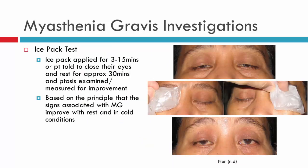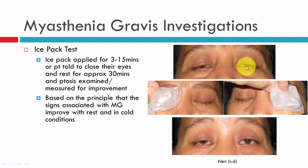Next, we have the ice pack test, which is far less invasive than the Tensilon test and can be primarily used in patients with ptosis. Here we can see a patient has a bilateral ptosis, and an ice pack is applied to either eye for around 3 to 15 minutes. The longer you apply it, the more you're resting and cooling the eyes. The principle is that if Myasthenia Gravis is causing the ptosis, resting and cooling the eyes will produce an improvement. Post ice pack test, we can see an improvement in the ptosis, which you can objectively measure and record.